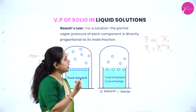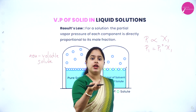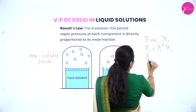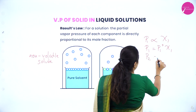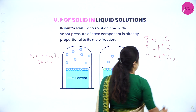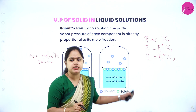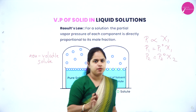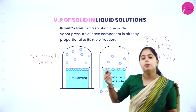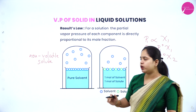This was in the case of liquid-liquid solutions. If there is a second component, by Raoult's law it will be P₂ = P₂⁰ × χ₂, giving the partial pressures of the first and second components. That was for liquid-liquid solutions; now we move on to solid-liquid solutions.